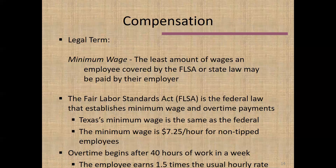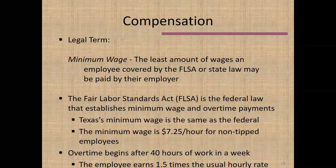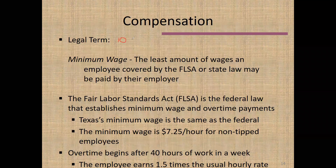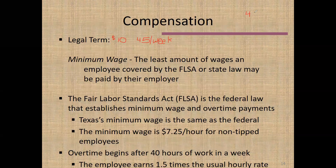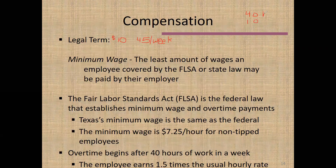A work week starts at 12:01 a.m. on Sunday morning and concludes at 11:59 p.m. on Saturday night. For example, if I am paid $10 an hour as my normal pay rate and I work 45 hours in a particular week on an hourly basis, we calculate pay as follows. First, we calculate straight time pay: the first 40 hours at $10 an hour — 40 times $10 equals $400.